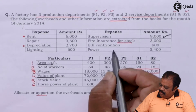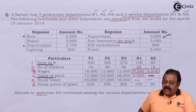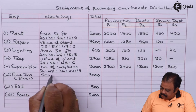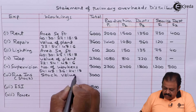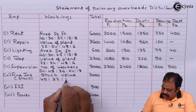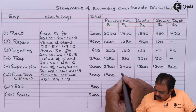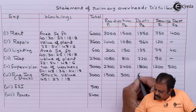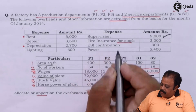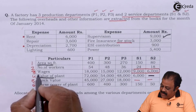Fire insurance for stock will be allocated based on stock value. ESI contribution will be allocated based on wages.